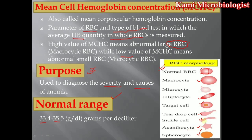Due to abnormality in the size of the RBC, the hemoglobin will not be picked up. Due to this, the oxygen levels become low. Or conversely, the oxygen levels can also become high, and hemoglobin levels can also become high. So the hemoglobin levels need to be maintained — not too high and not too low.